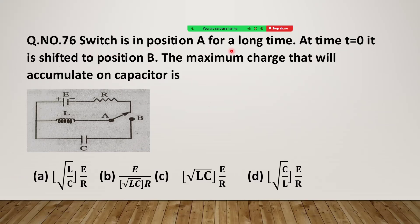The switch was in position A for a long time — meaning it was an LR circuit. At T equal to 0, it is shifted to position B, making it an LC circuit. The maximum charge that will accumulate on the capacitor is asked. For a long time in the LR circuit means maximum current, or final current, equals E by R. Now shifting the switch to position B: the LC circuit has the inductor at maximum current and the capacitor uncharged — energy is stored only in the inductor.